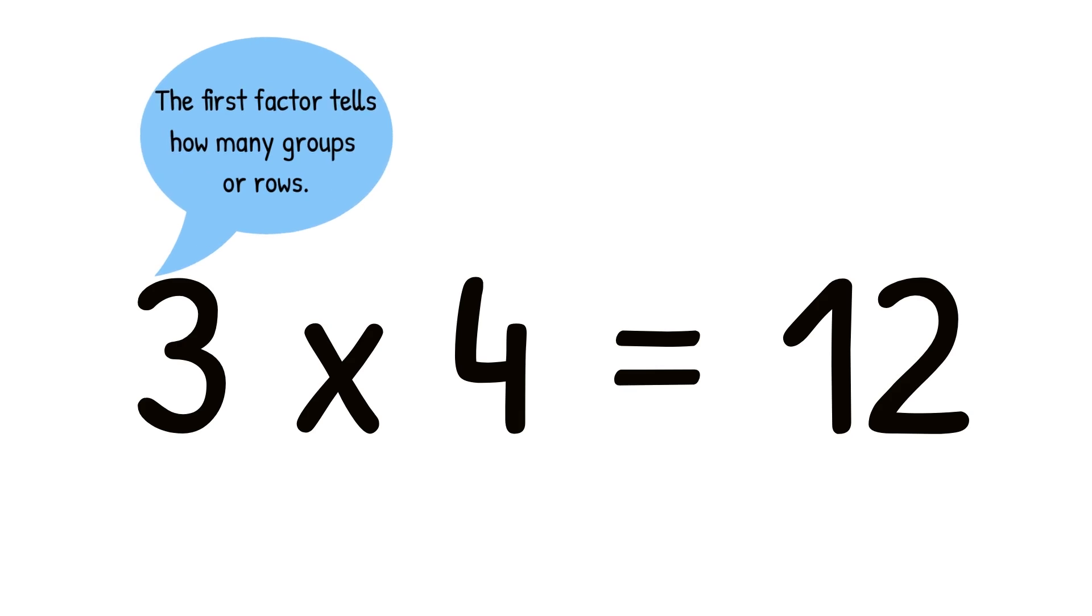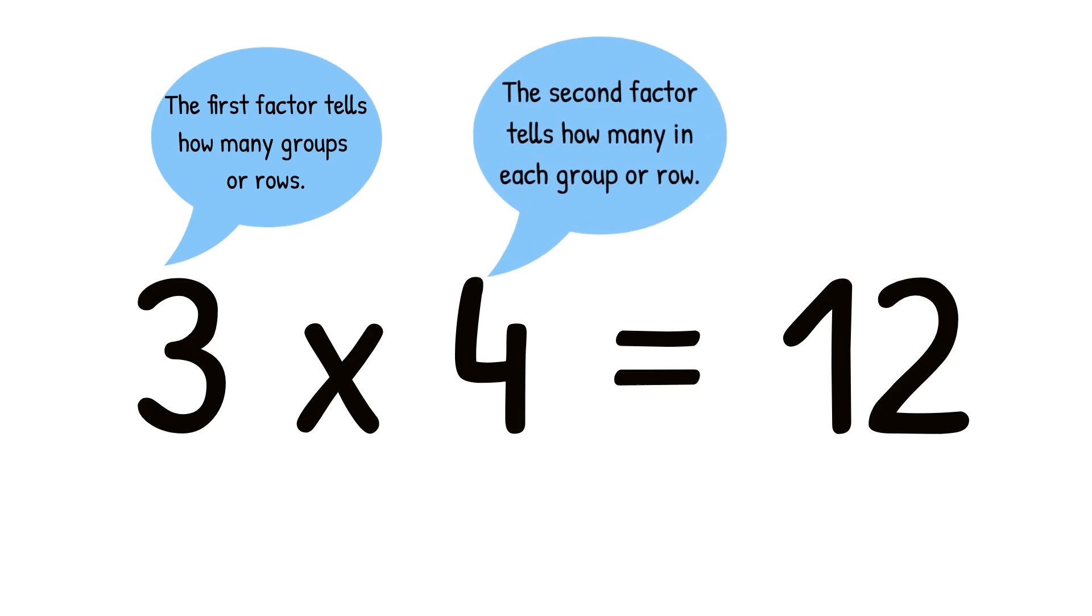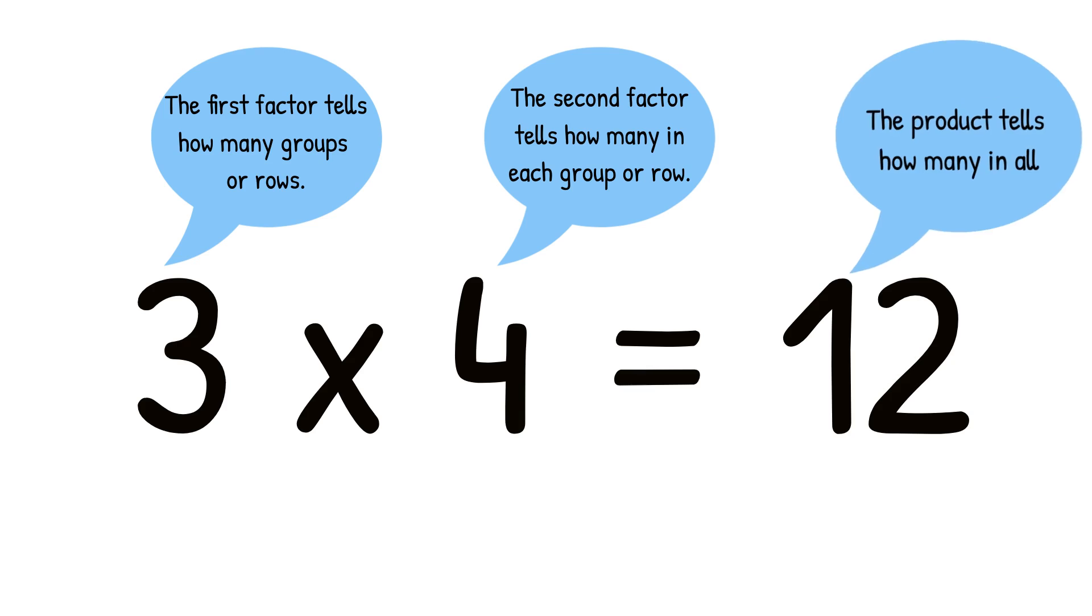The first factor tells how many groups or rows. The second factor tells how many in each group or row. The product tells how many in all.